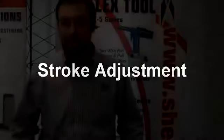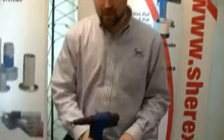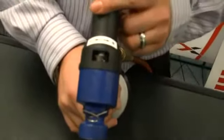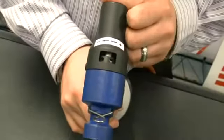Now that we have the proper thread size on the nosepiece installed onto the tool, we will next adjust the stroke distance, the pulling distance of the tool for the application. As you can see on the Flex 5S, we have a cutout window on the top of the tool, exposing a stop block.